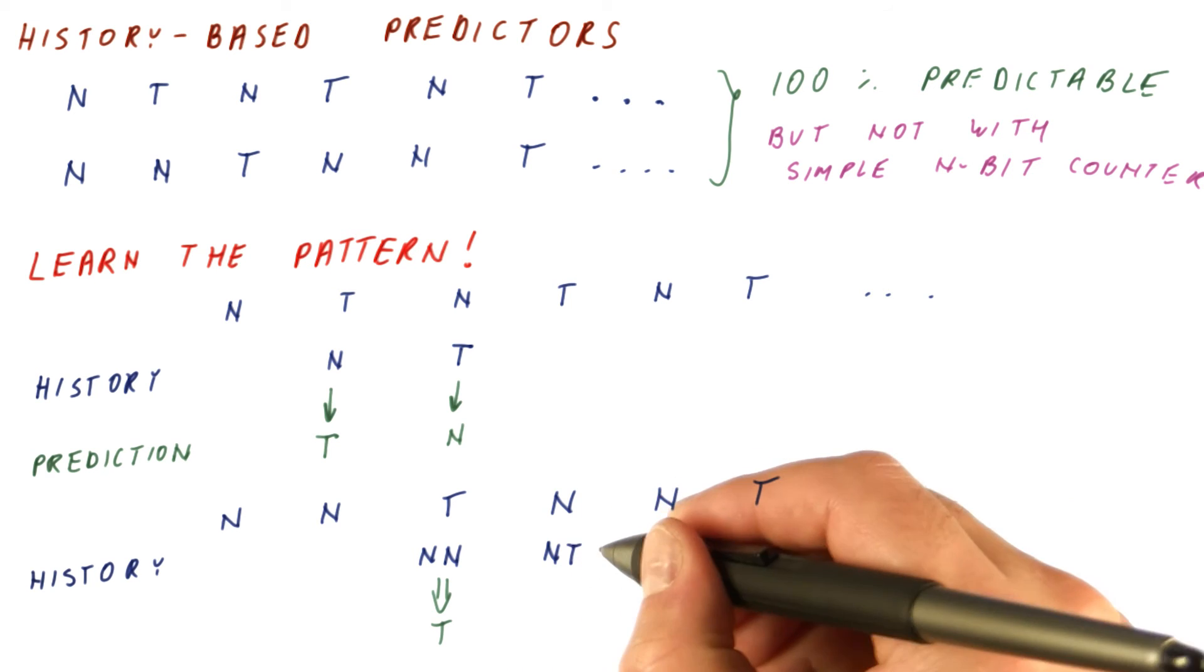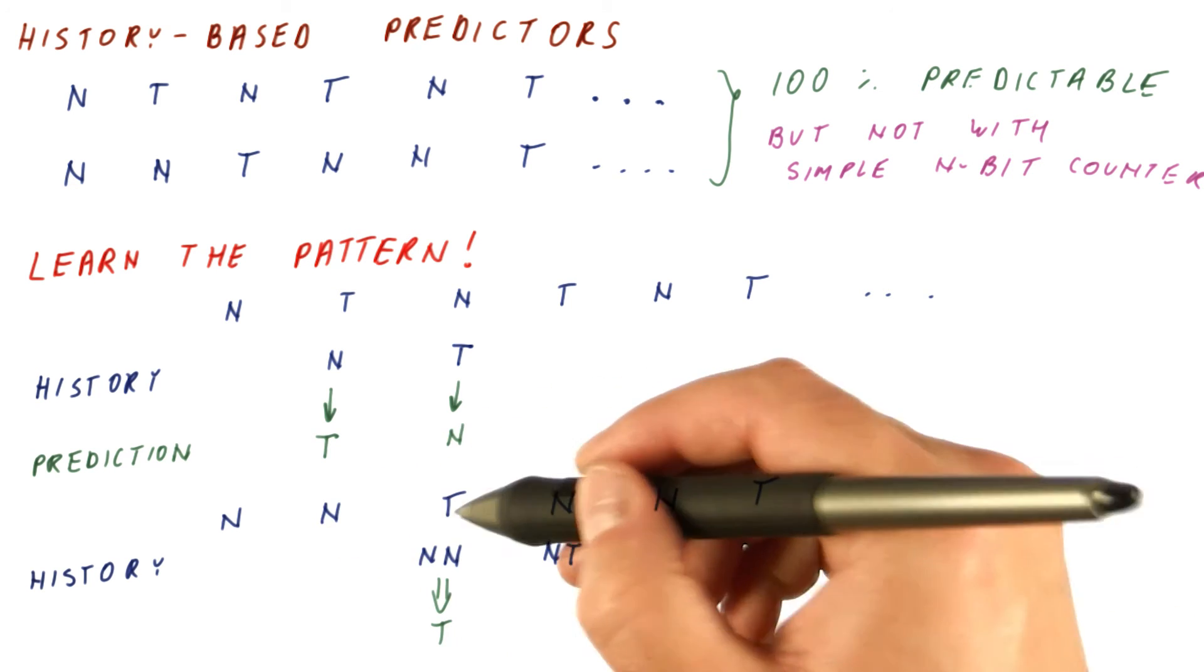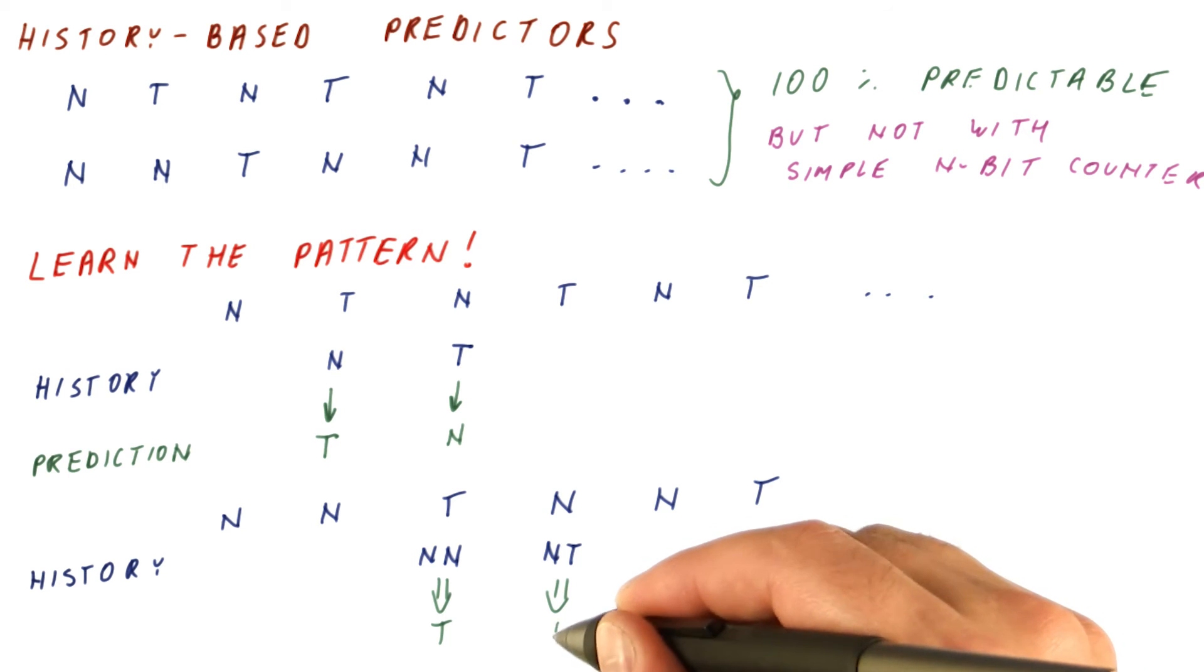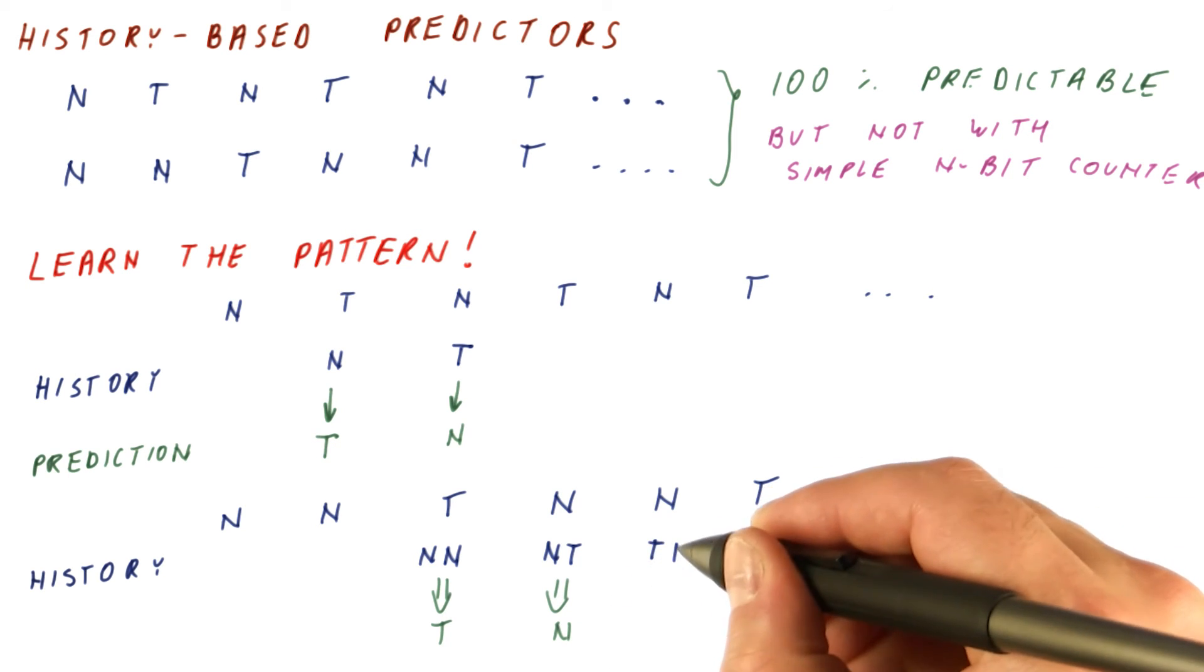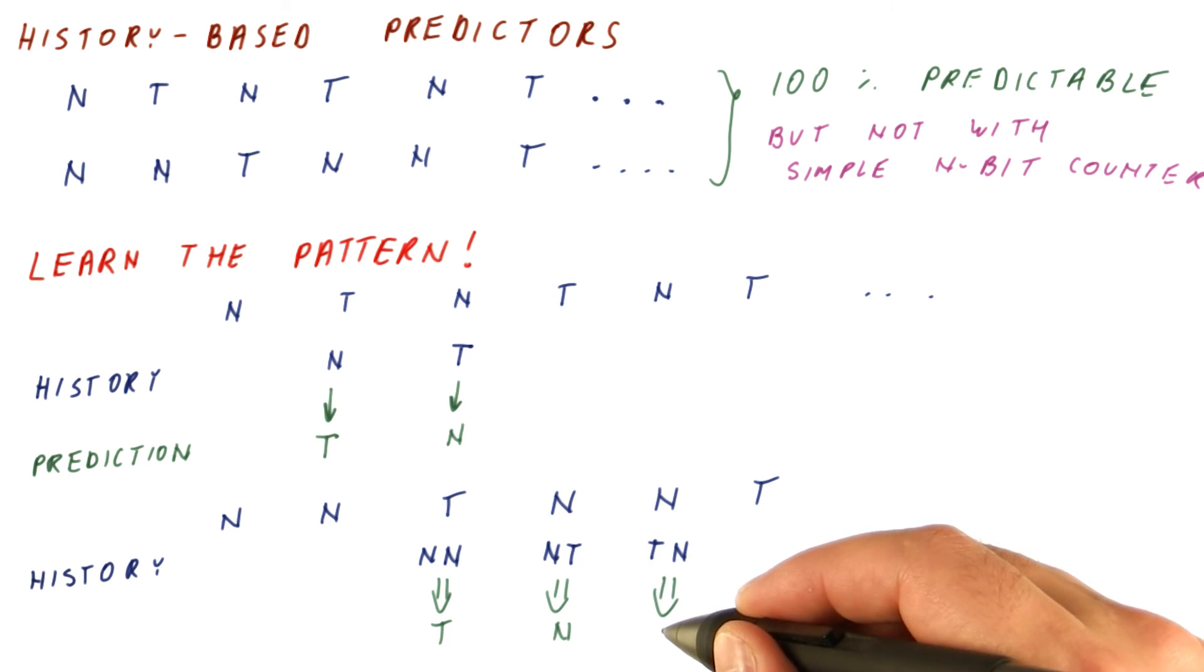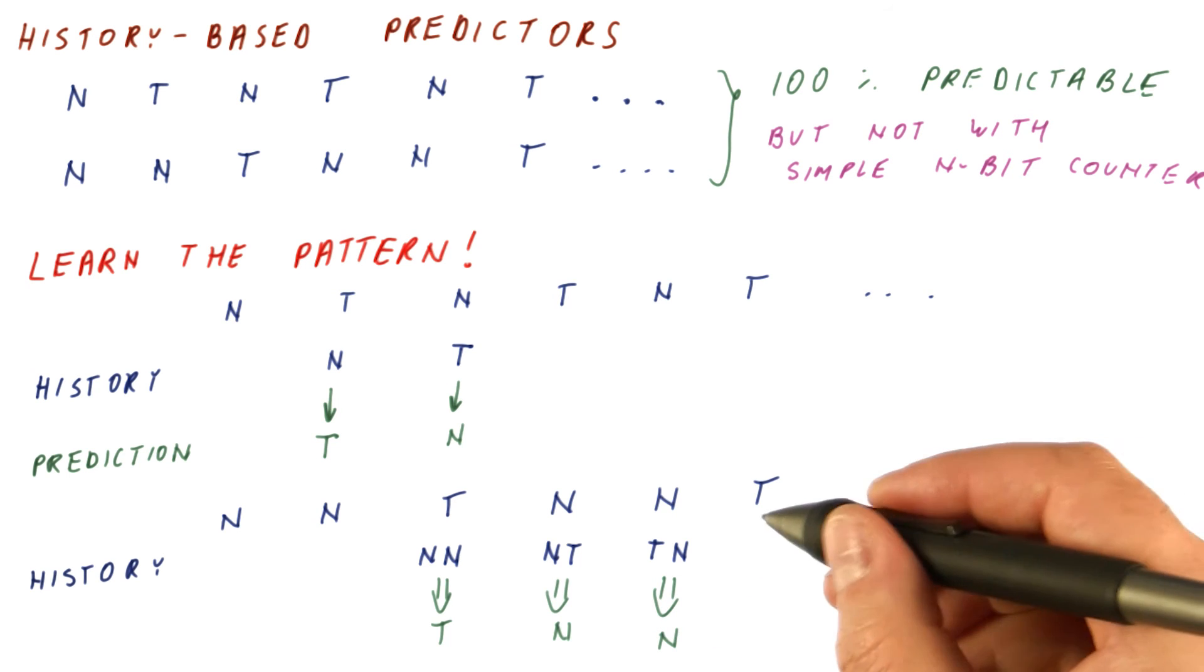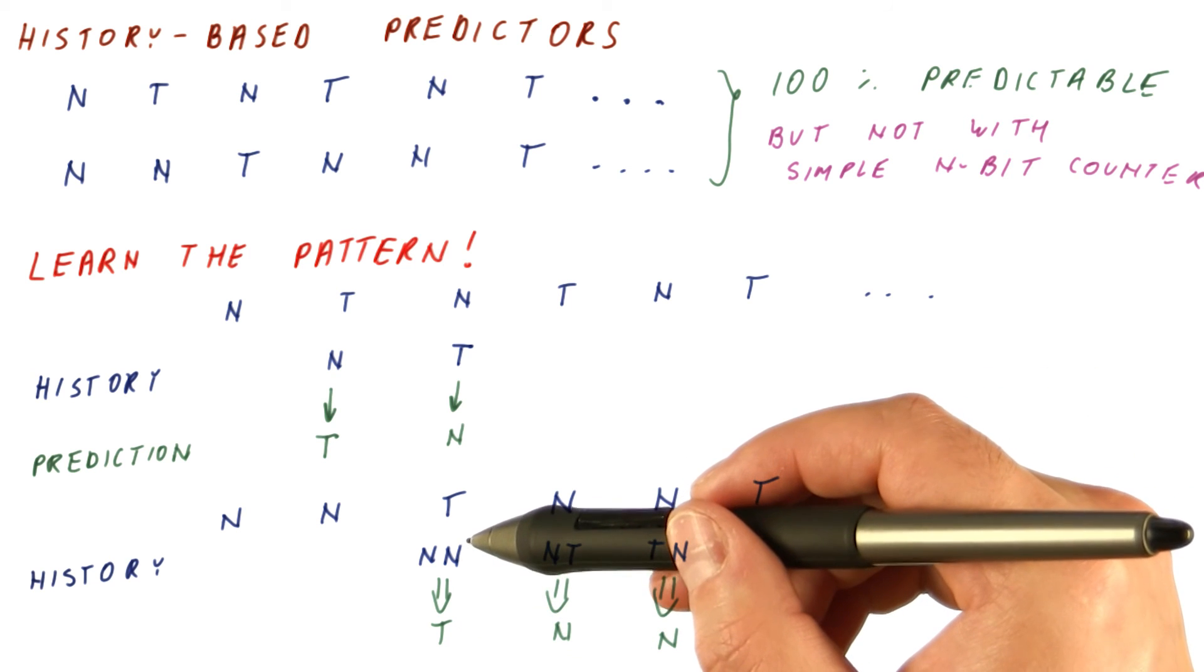When we see not taken, taken, as the previous two outcomes, we should be predicting not taken. And when we see taken, not taken, we should be predicting not taken. And then we're back to not taken, not taken history, where we should be predicting taken.